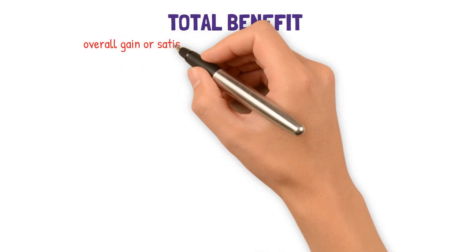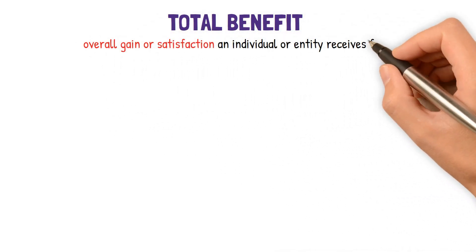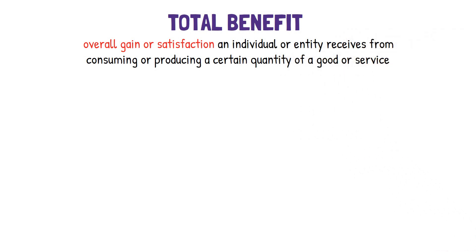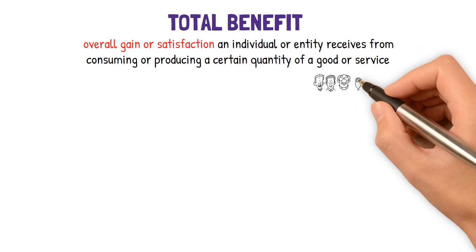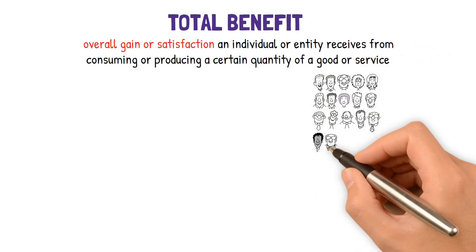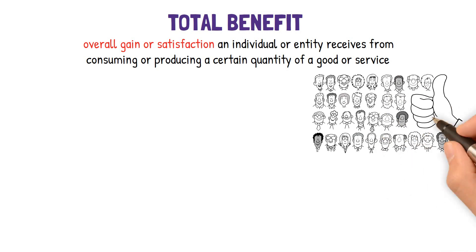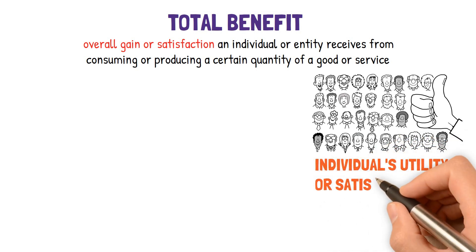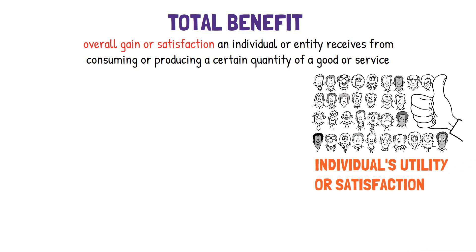Total benefit refers to the overall gain or satisfaction an individual or entity receives from consuming or producing a certain quantity of a good or service. It is the sum of all the benefits that result from a particular decision or action. Total benefit can be measured in various ways, depending on the nature of the decision or action. For example, in consumer behavior, the total benefit is often measured in terms of an individual's utility or satisfaction from consuming a good or service.